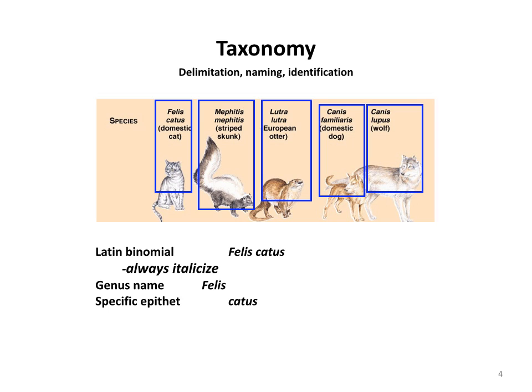The European otter is similarly Lutra lutra. For the domestic dog, it's Canis familiaris. And here's a case of two different species in the same genus: the wolf is Canis lupus. The domestic dog and wolf are congenerics — in the same genus. If two animals are in the same species, we say they're conspecifics. Every organism on Earth that has been described has a taxonomy that includes all of the groups it belongs to, including its Latin binomial scientific name.